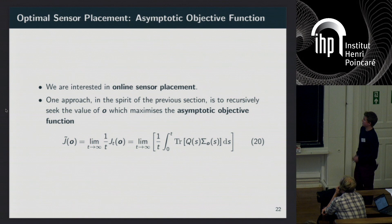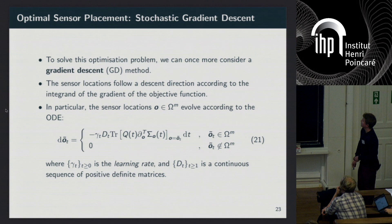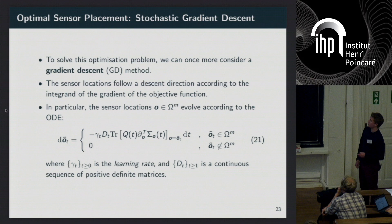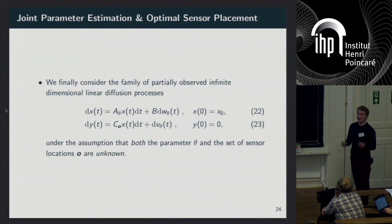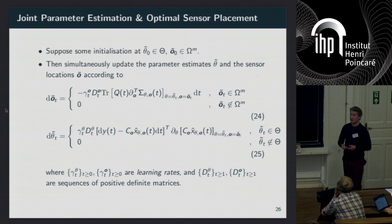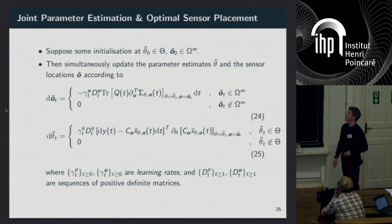We want to perform sensor placement online as well. In the spirit of the previous section, we consider an asymptotic objective function and use a gradient descent algorithm: the sensor locations follow a descent direction according to the gradient of the integrand, giving an ODE for the sensor locations. Now combining both problems: theta evolves according to an SDE and O according to an ODE. We hope that the thetas will go to the maximum of the asymptotic log likelihood and the sensor locations will go to the minimum of our asymptotic objective function.